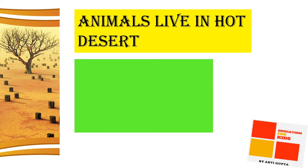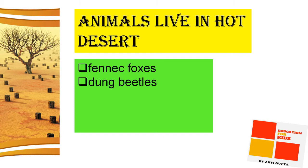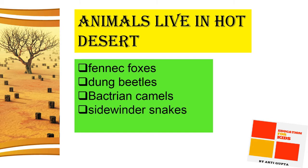The southern hemisphere includes the Atacama Desert, Namib, Kalahari, and the Great Australian Desert. Animals that live in hot deserts include the fennec fox, dung beetles, Bactrian camels, sidewinder snakes, thorny devil lizards.